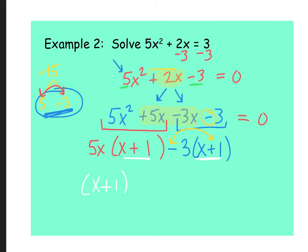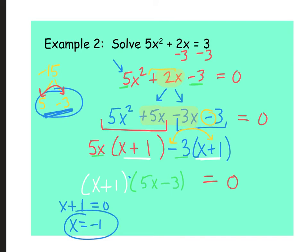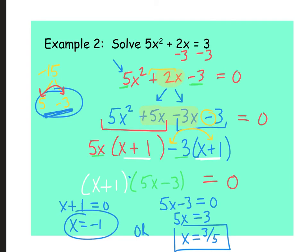Since both groups share the factor (x+1), we factor that out: (x+1)(5x minus 3) equals zero. Now we apply the zero product property — either x plus 1 equals zero, giving x equals negative 1, or 5x minus 3 equals zero. Adding 3 and dividing by 5 gives x equals 3/5. Make sure to list both answers since they both solve the equation.